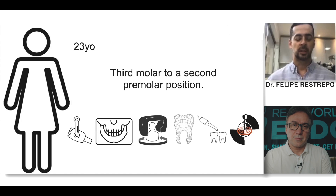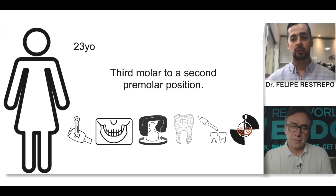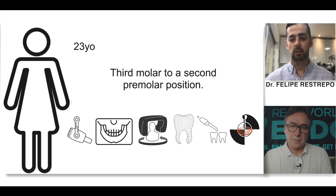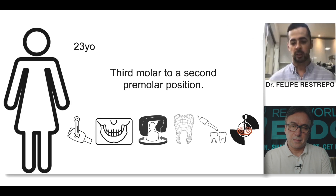This is a case representing one clinical scenario we can find: when you don't have a socket at all. You have to create the socket from zero. This is a 23-year-old patient and we're transplanting a third molar to a second premolar position. What we used here was a periapical x-ray, panoramic x-ray, and CBCT.